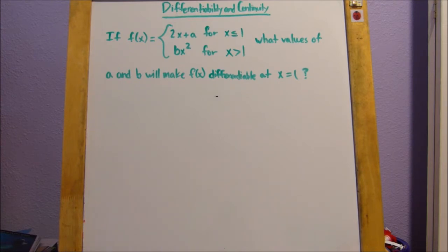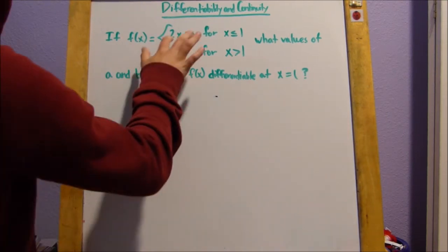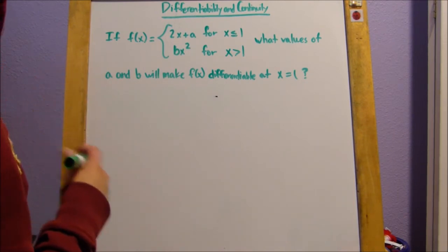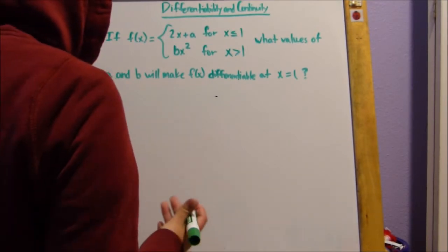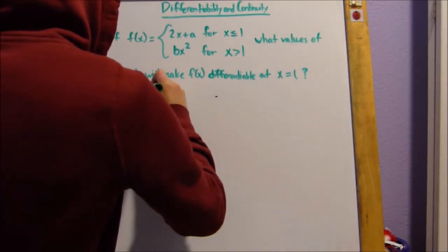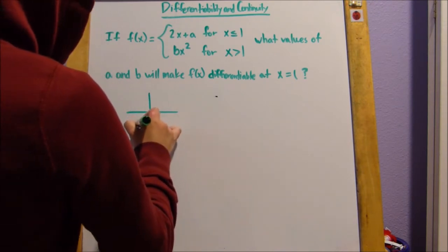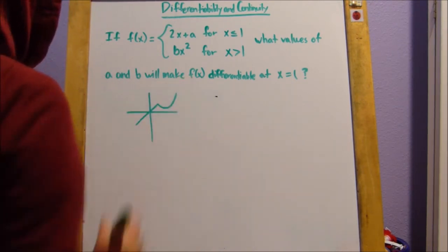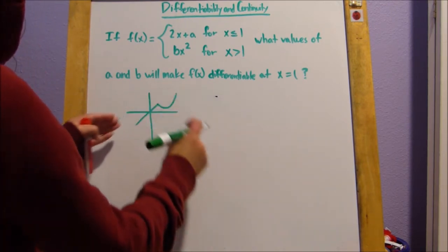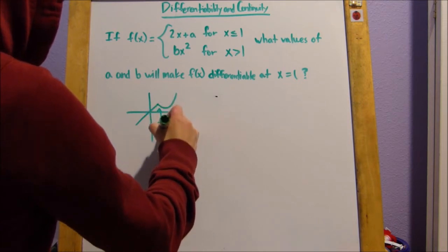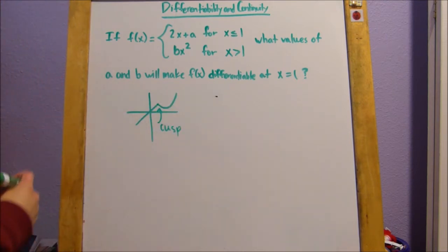so for this problem, we should figure out what our slopes, we should just graph something out and figure out how we're going to solve this. So, the first thing I notice is that 2x plus a, that's going to be a linear function, right? And then b times x squared, that's going to be a quadratic of some sort. Now, I know that if I were to graph out some random linear function and then some random quadratic, these slopes are going to end up being the same, right? Because this is going to be a cusp.